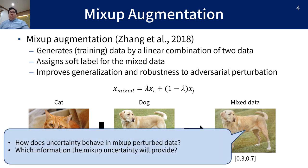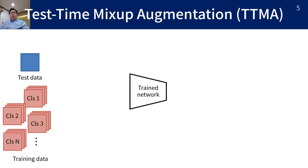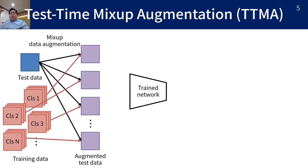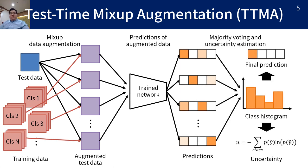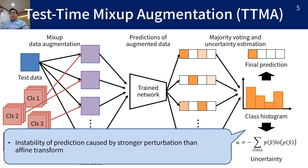In our research, we apply mixup augmentation to the test time augmentation-based uncertainty estimation method to explore its behavior and characteristics. In our workflow, we first augment the test data by mixup augmentation with a number of data samples from the training set. The rest of the process is equivalent to conventional test time augmentation. We obtain the uncertainty as the instability of prediction caused by this stronger mixup perturbation.